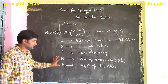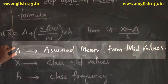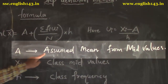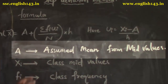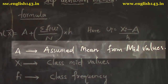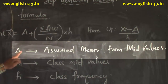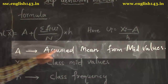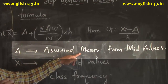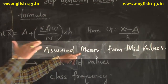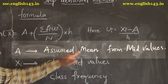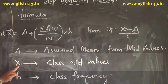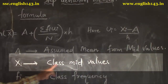We will see the individual terms. 'a' means assumed mean, taken from the mid values. We have some class intervals, and we take the mid values. From those mid values, we select one value as the assumed mean — it is our choice, we can take any one from top to bottom. 'xi' means the respective class mid values.